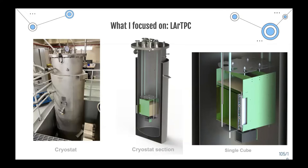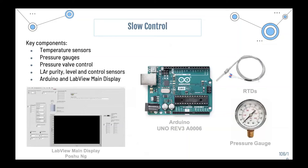We're using liquid argon, but how do we keep liquid argon liquid at a given temperature and pressure? We use slow controls. Slow controls are devices able to monitor and regulate the temperature, pressure, and liquid level of liquid argon. Not only do they help keep the pressure and level of liquid argon steady, but they are also implemented with a negative feedback loop able to maintain liquid argon pressure and temperature stable.